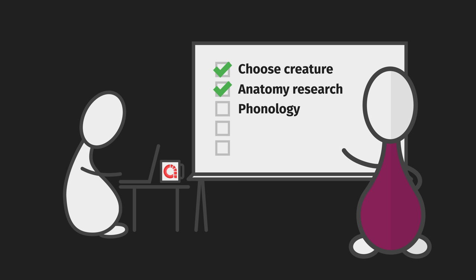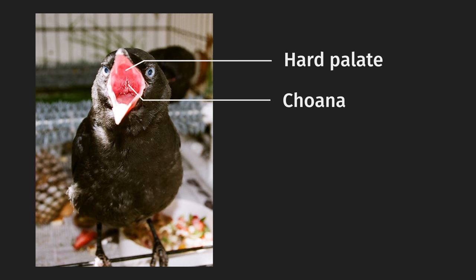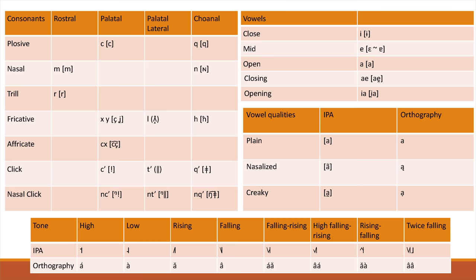Yes, so for my avian conlang, spoken by a fictional corvid species, I looked at diagrams of a bird's mouth. You can see they have no soft palates, alveolar ridges, or teeth for velar, alveolar, or dental sounds, but they do have a hard palate and a feature called the choana, which is fused in mammals. The choana connects to the nasal cavity, so closing it could change a nasal sound to a modal one. I gave a palatal series, a palatal lateral series, and a coanal series, which I pronounce as uvular when I speak the language.